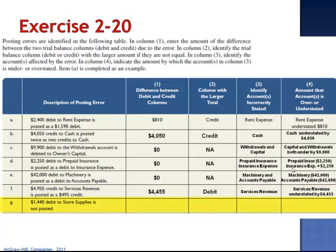Letter G — a $1,440 debit to store supplies is not posted. Since the error affects a dollar amount, there is a difference between the debit and credit columns. The column with the larger total is the credit column, as the debit was missed altogether. This leaves store supplies incorrectly stated — understated by $1,440.